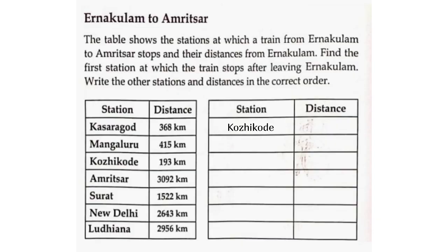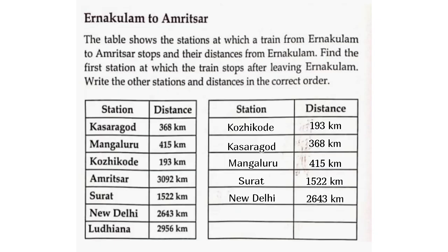Answers in correct order by distance: Khoi Code 193 km, Kasaragod 368 km, Mangaluru 415 km, Surat 1,522 km, New Delhi 2,643 km, Ludhiana 2,956 km, Amritsar 3,092 km.